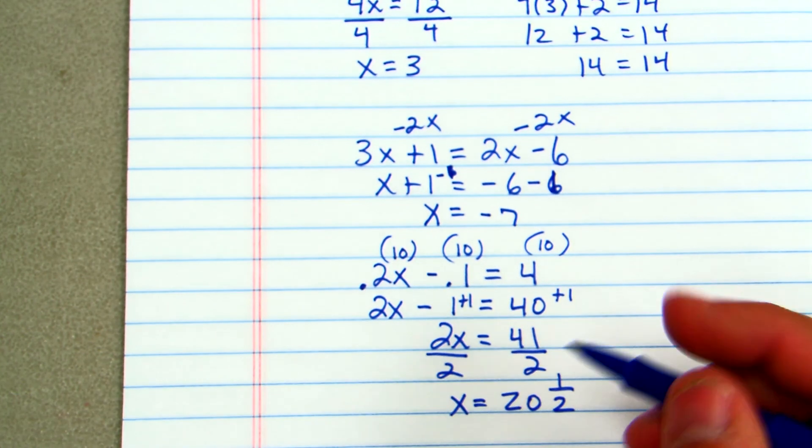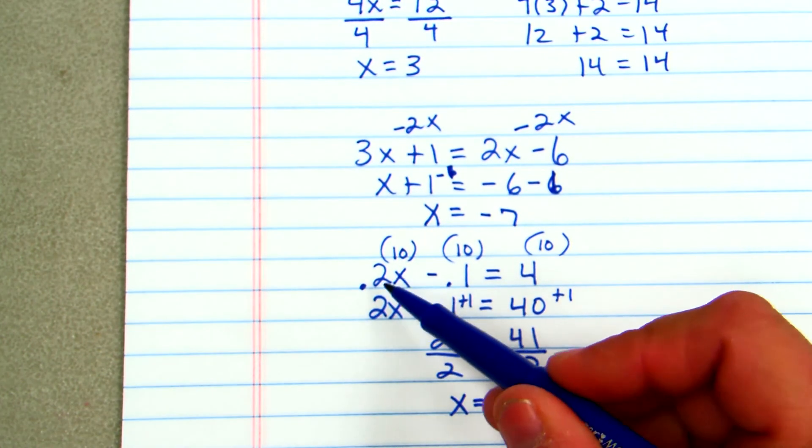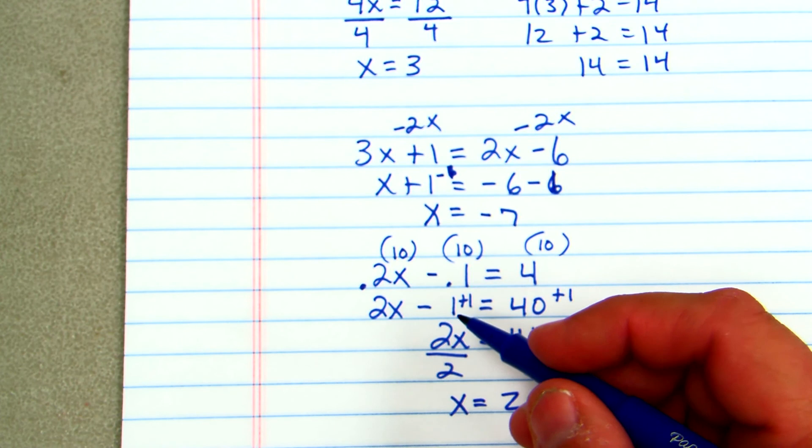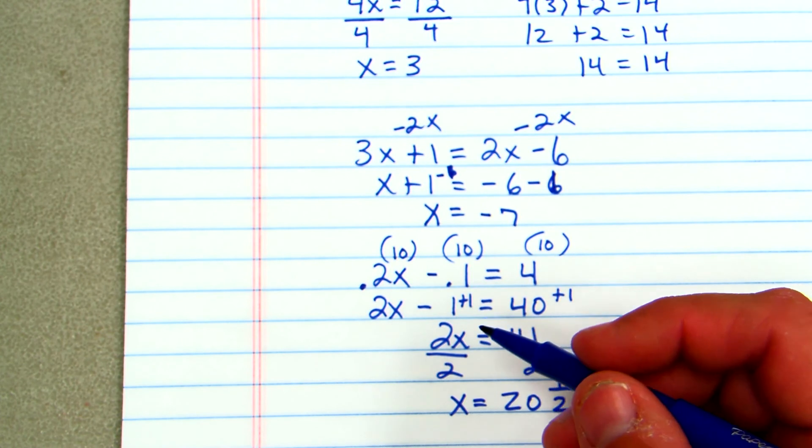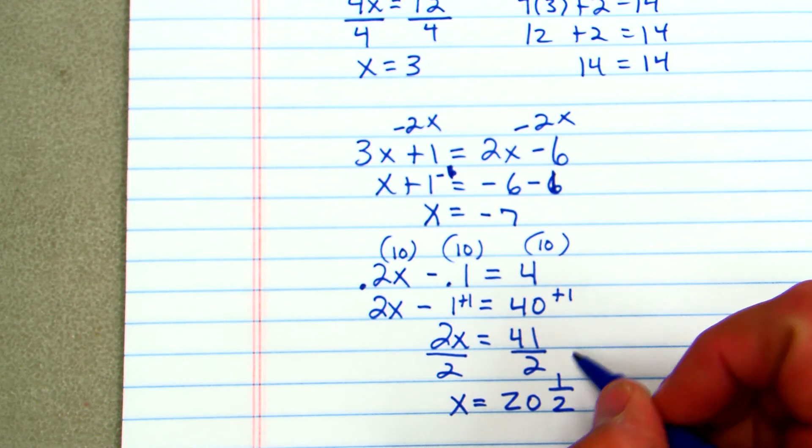But the first step is to go in and see how many decimals. For instance, if I'd have had 0.02, then I'd have multiplied everything by 100. You want to make sure that you can clear out those decimals.